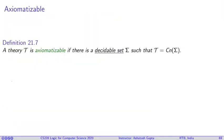So sigma is a means of defining theory. But something more is important, and that is sigma to be a decidable set. If sigma is a decidable set, then we say theory T is axiomatizable.